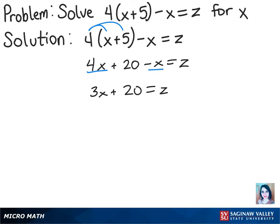And we want x to be by itself, so let's subtract 20 from both sides. And then we'll get 3x equals z minus 20.